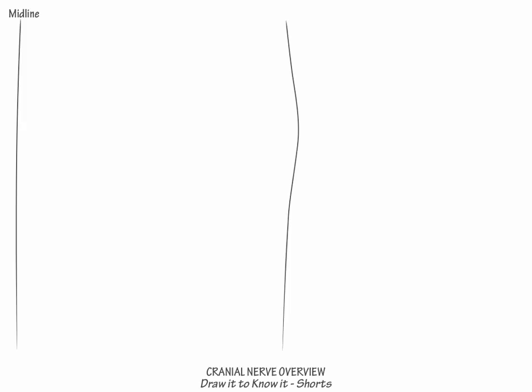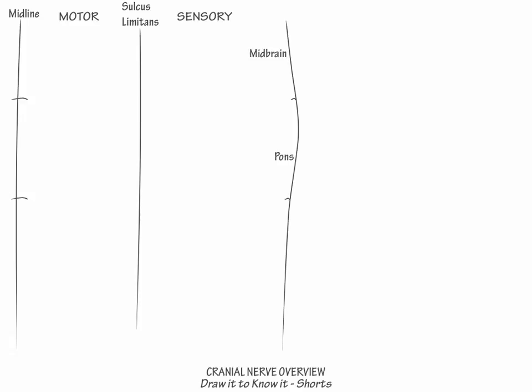Here we will create a cranial nerve overview. First, draw a coronal brain stem. Label the sulcus limitans, then the medial motor division, which is derived from the basal plate, and the lateral sensory division, which is derived from the alar plate. Next, from rostral to caudal, label the midbrain, pons, medulla, and cervical spinal cord. Adjacent to the diagram, start a table with the header: number, name, and key function.